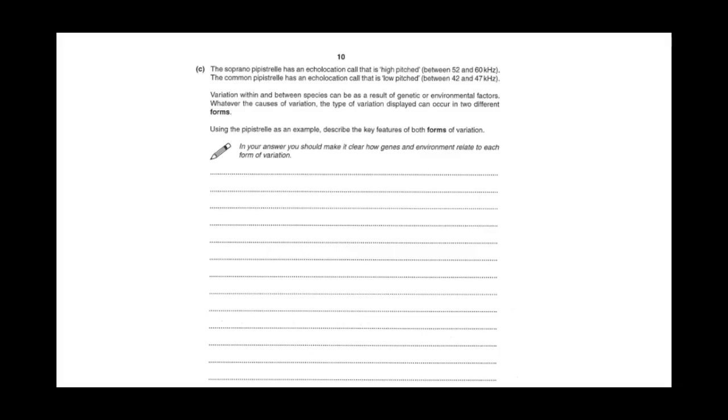Here we have an example of an exam question - pause if you want to have a go. What we should be doing is using the information to identify what variation is, and it's actually both forms of variation. This is from the old spec.